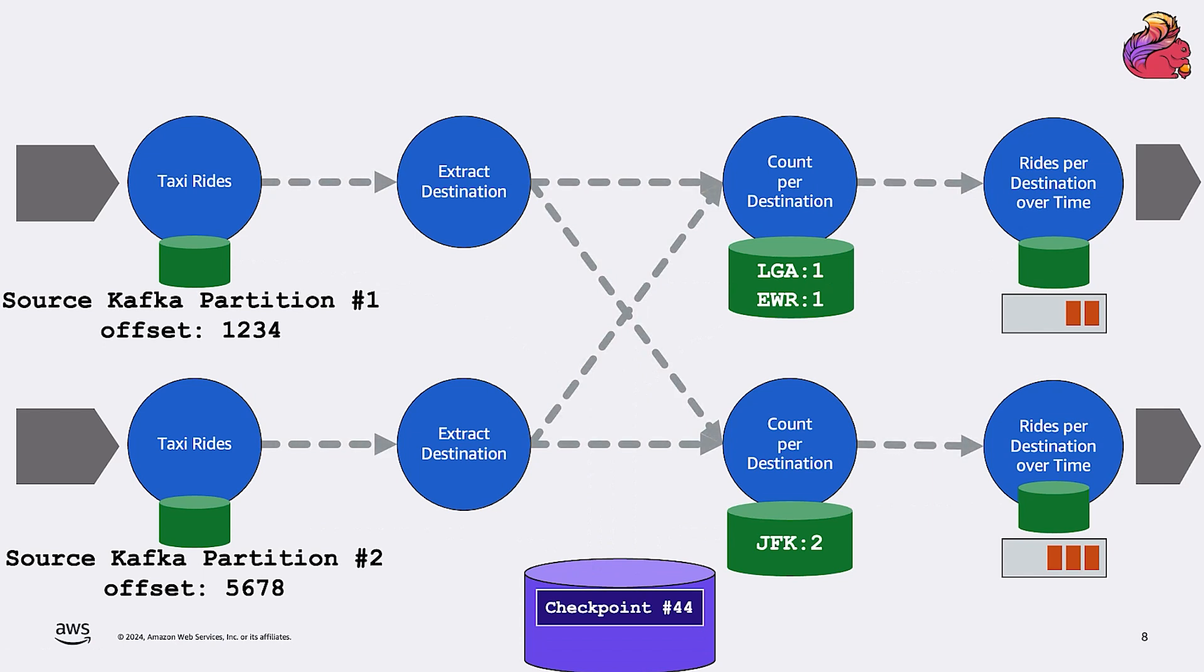Something interesting to note is Flink doesn't use a naive stop-the-world approach to take the snapshot, something like freeze the application processing, take the copy of the state, and then restart. This would be easy to implement but very inefficient. Instead, Flink checkpoint happens asynchronously. So data processing is not really stopped except for brief moments. And we will dive into the Flink checkpoint mechanism later in this series. For now, let's switch to see how Flink uses checkpoints to restore the state.